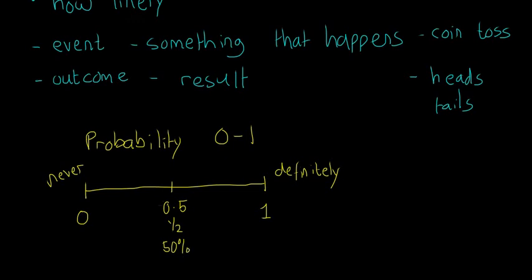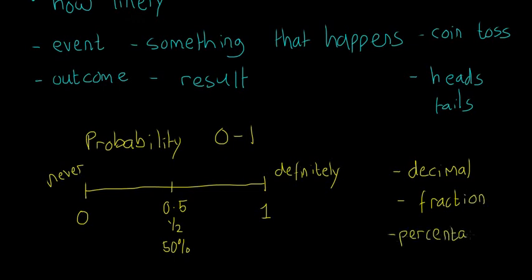0.5, one half, and 50% — those are the three ways that we generally write probability: as a decimal, as a fraction, or as a percentage. Which one you use really depends on the situation. This end would be 100% and the other end 0%. They're just different ways of showing the same thing.